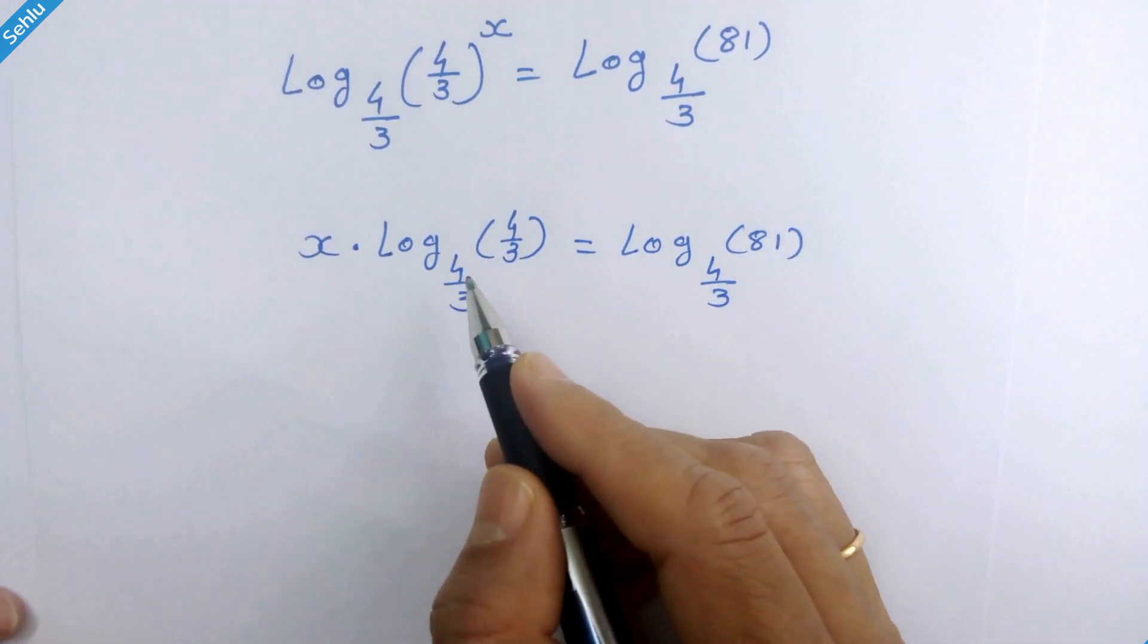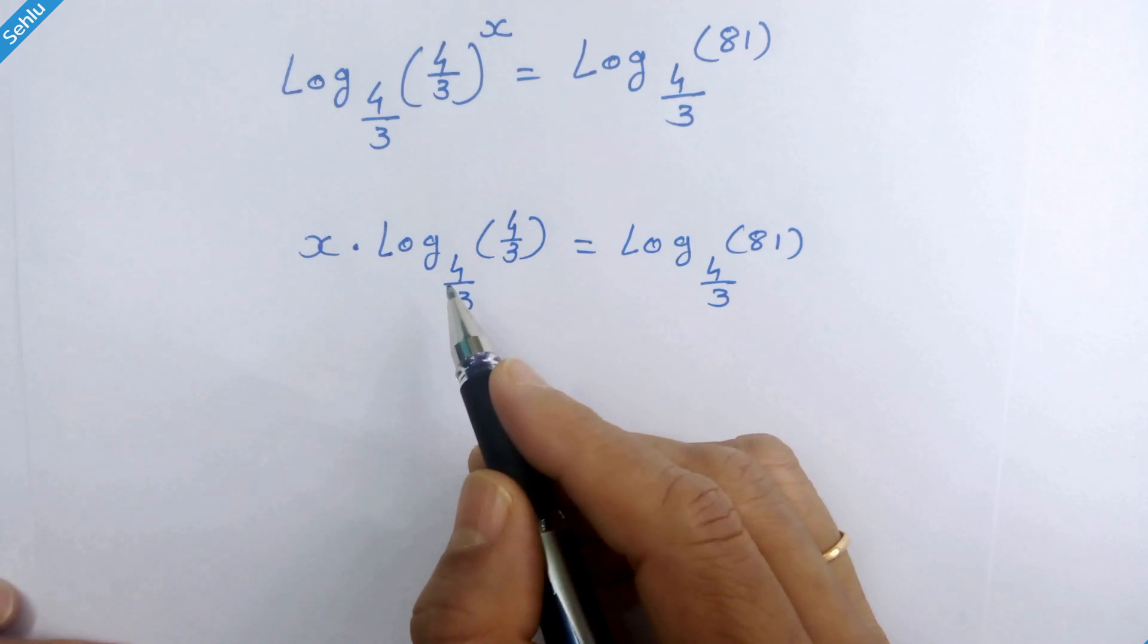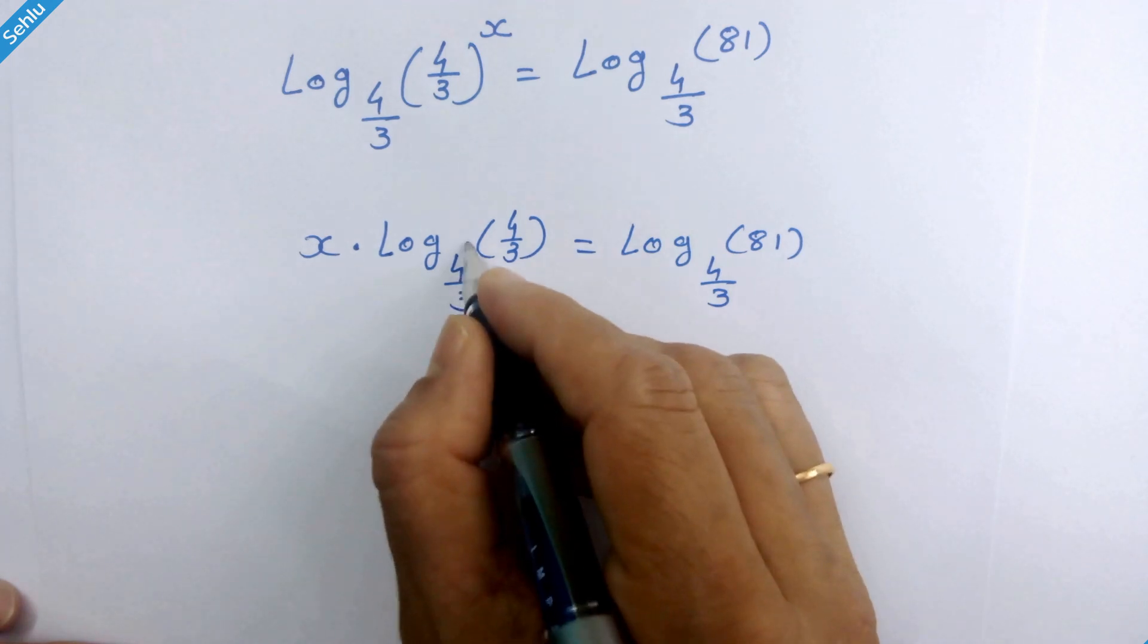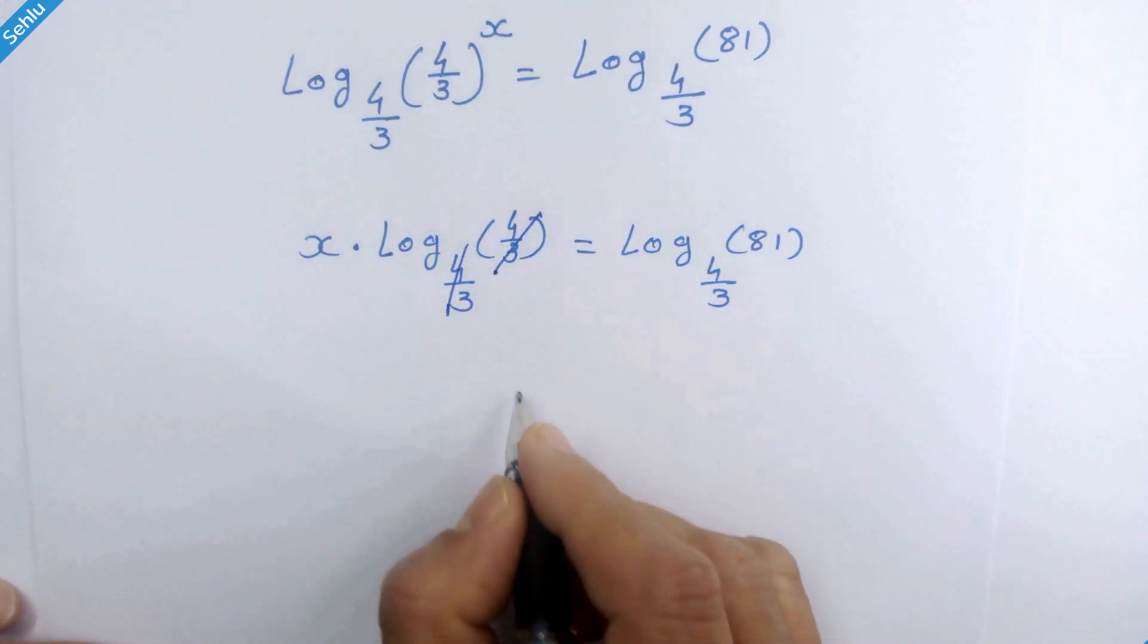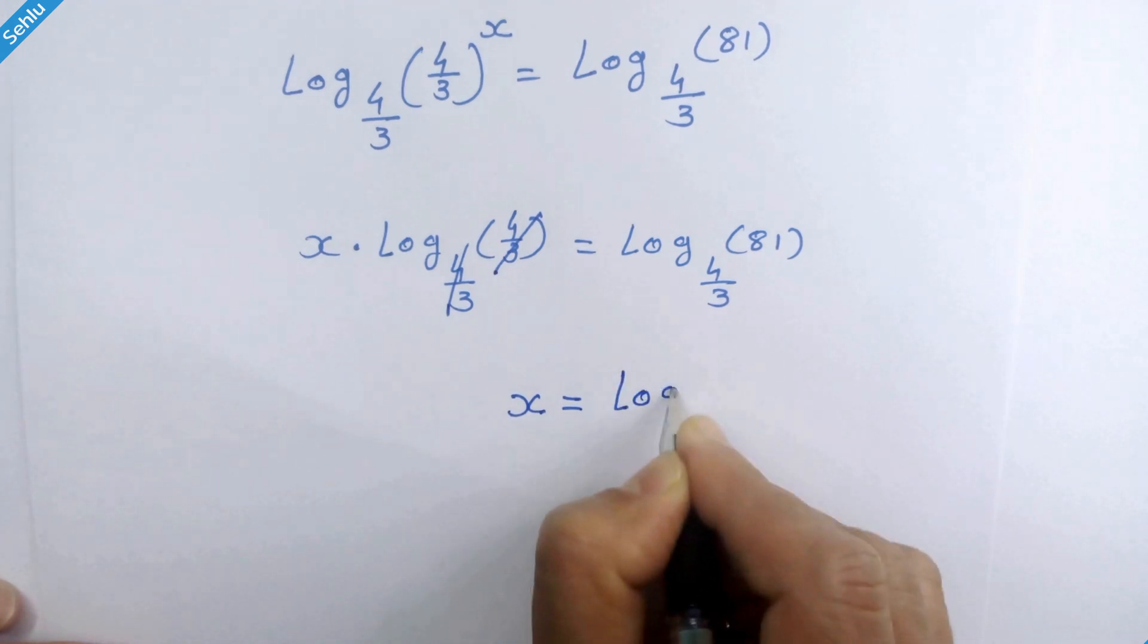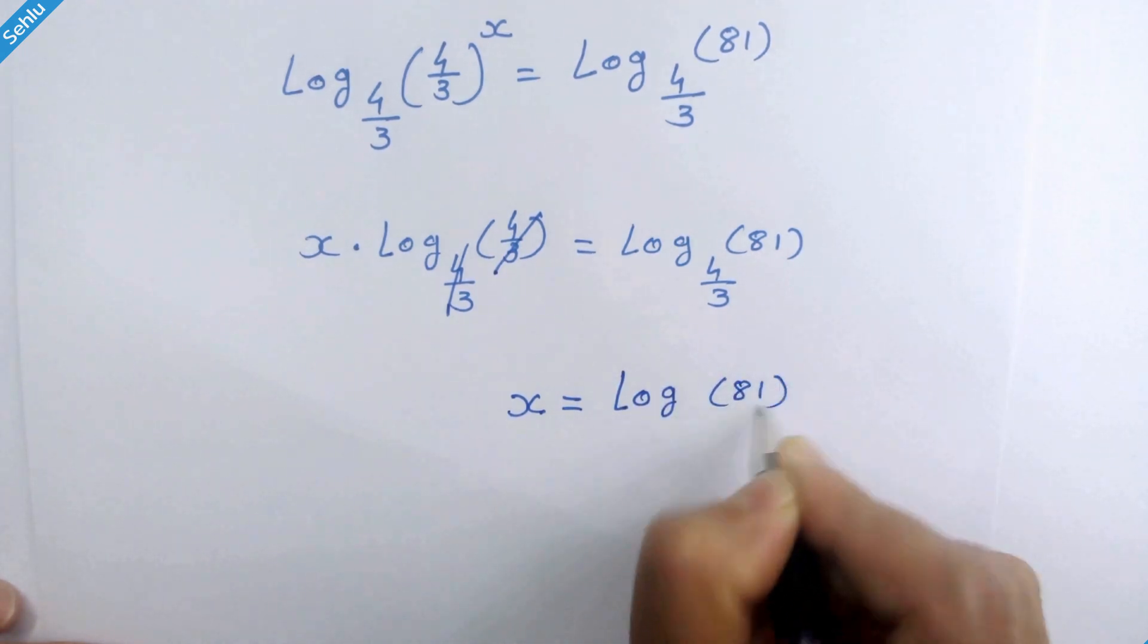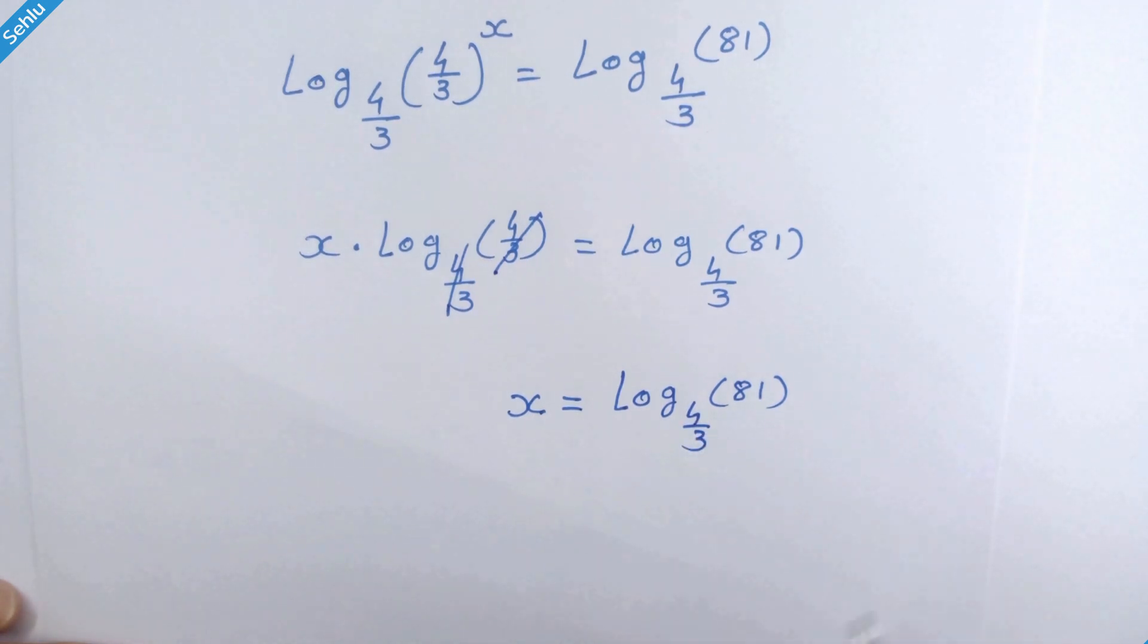Now here the base of log and its expression both are same. So they will cancel each other. So we have x is equal to log of 81 base 4 over 3.